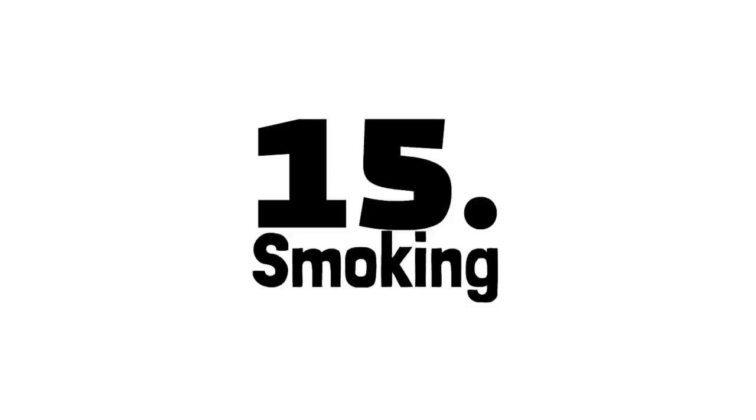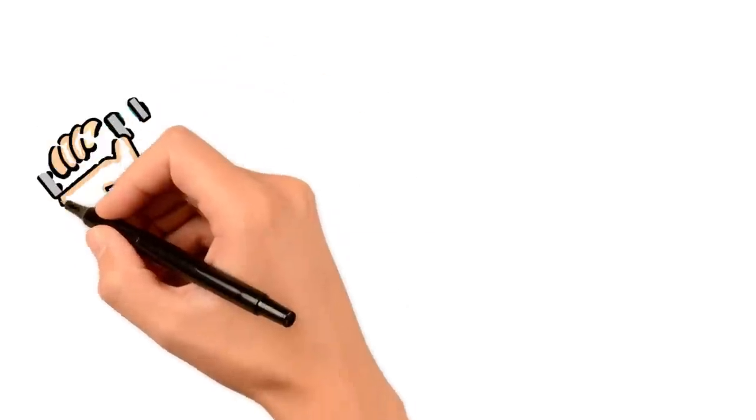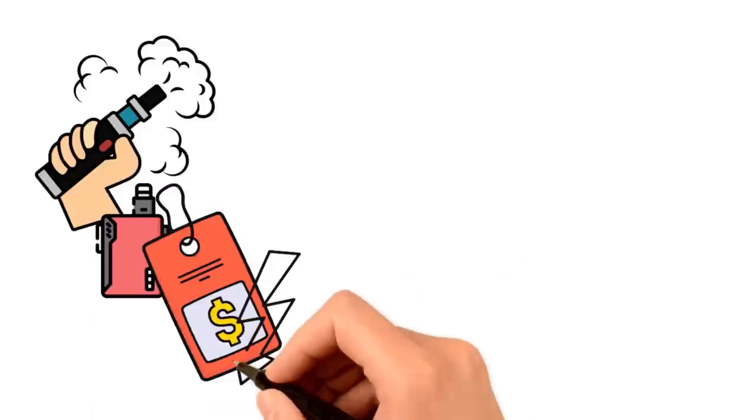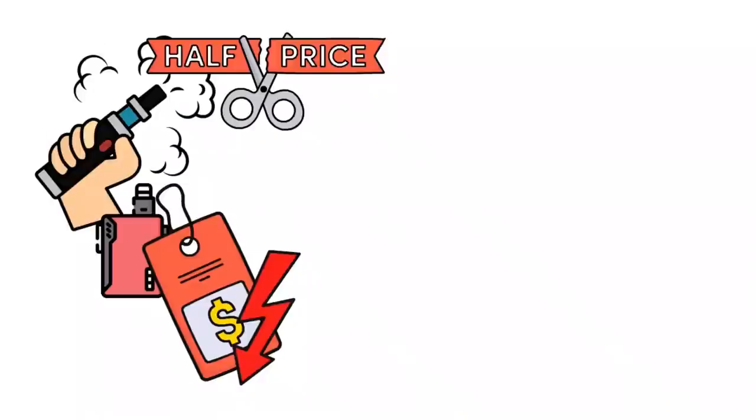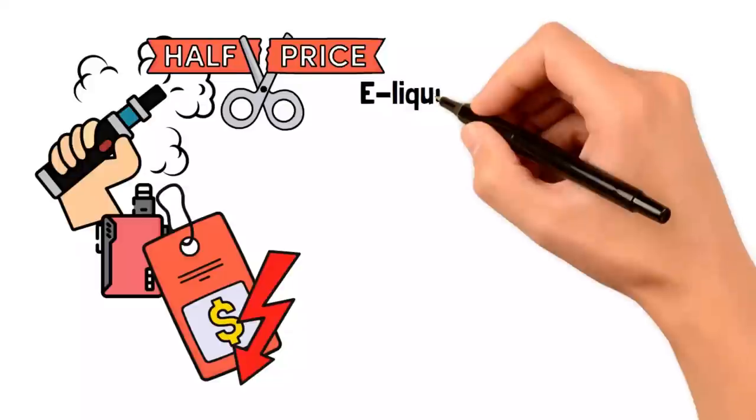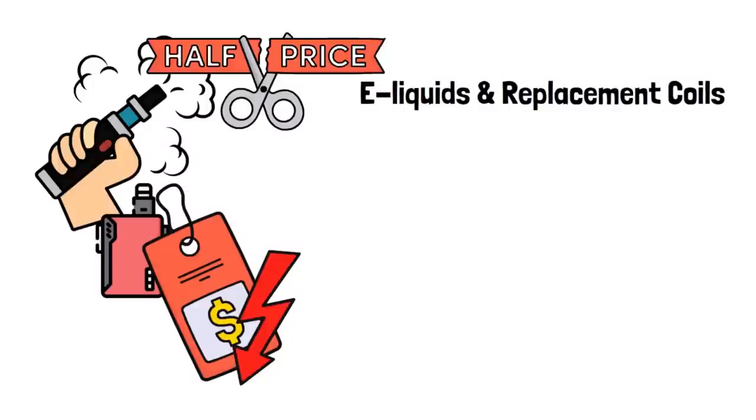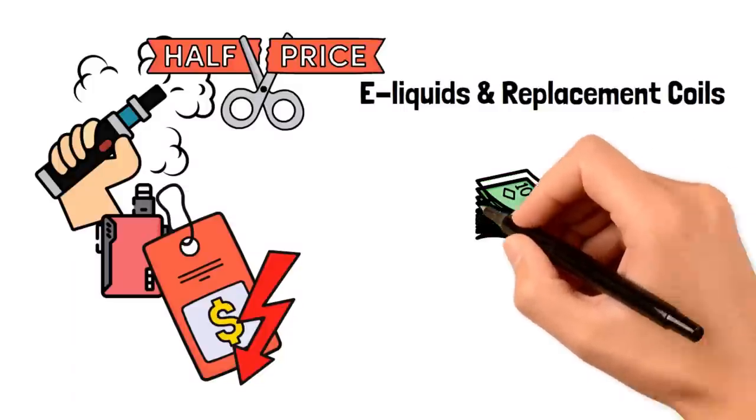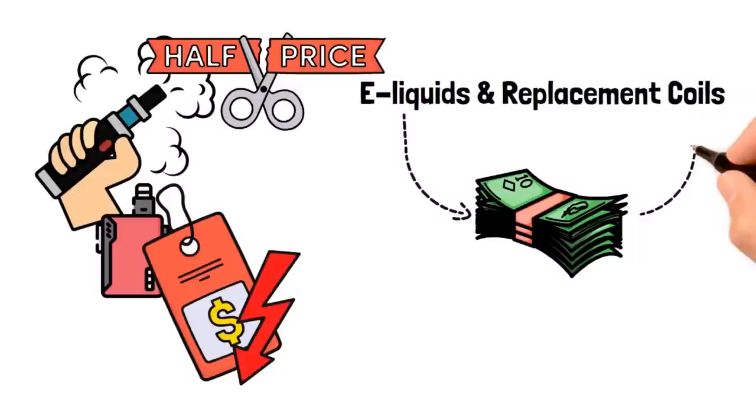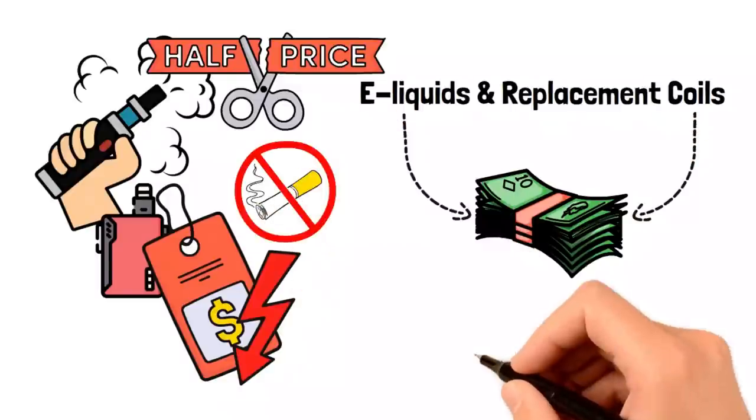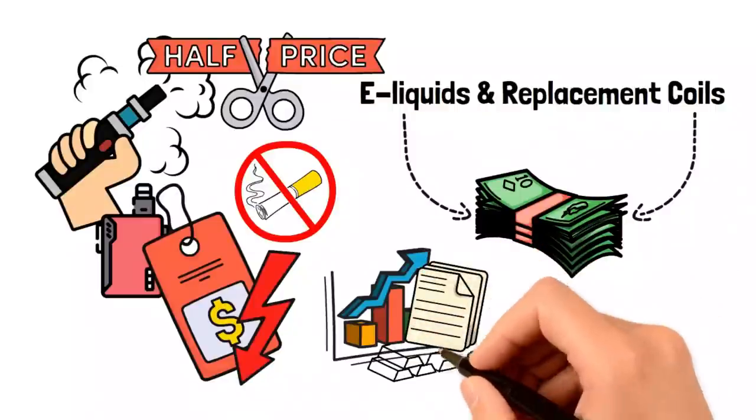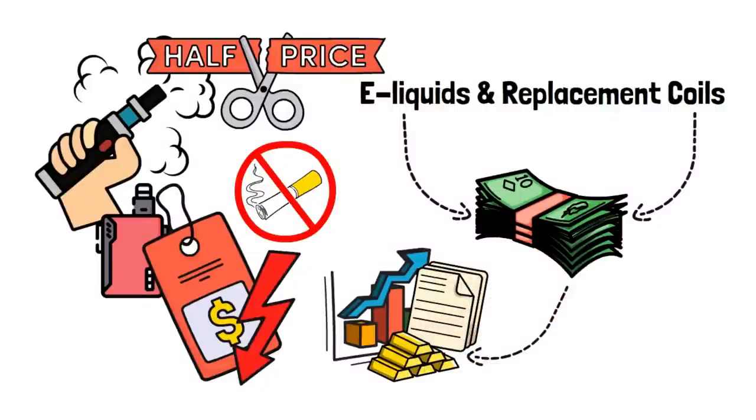Number fifteen, vaping. Some folks might consider vaping as a more affordable alternative to smoking. It's true that the initial cost of a vaping device might be lower compared to buying a pack of cigarettes every day. But there are ongoing expenses to consider with vaping too. You've got to purchase e-liquids and replacement coils regularly, and those costs can quickly start adding up, especially if you're on a tight budget. It's crucial to find alternatives and seek support to overcome these habits and invest in a better future.